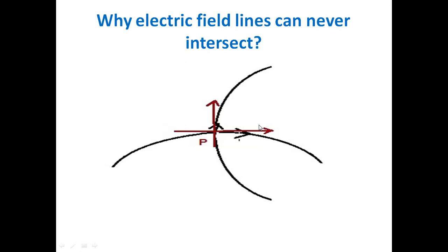So what we see is that at point P there are two electric field intensity vectors existing simultaneously, which is not possible — at any point there can exist only one electric field intensity vector. This is the reason electric field lines never intersect. Notice again: the two field lines intersect at point P, giving two tangents and thus two electric field intensity vectors at a single point, which is impossible. This is why two electric field lines never intersect.